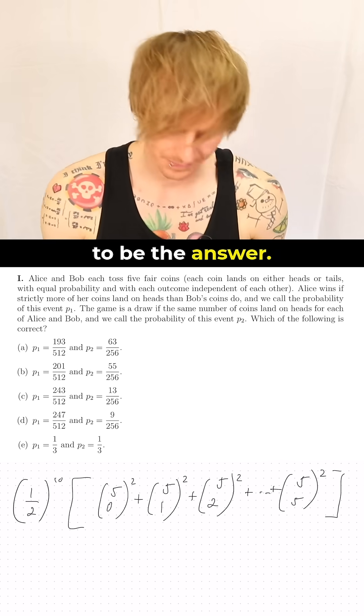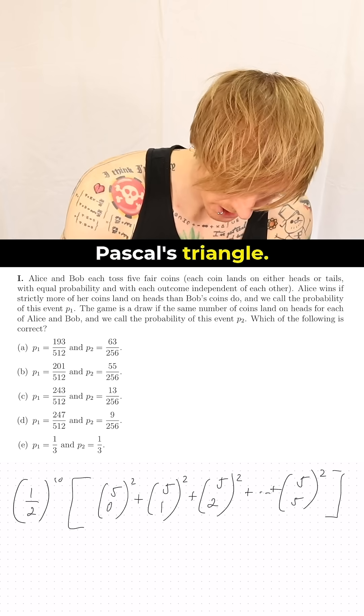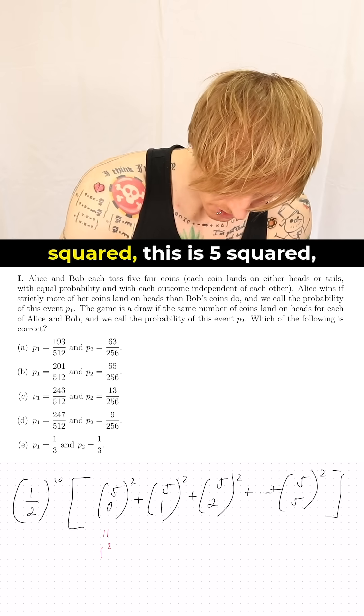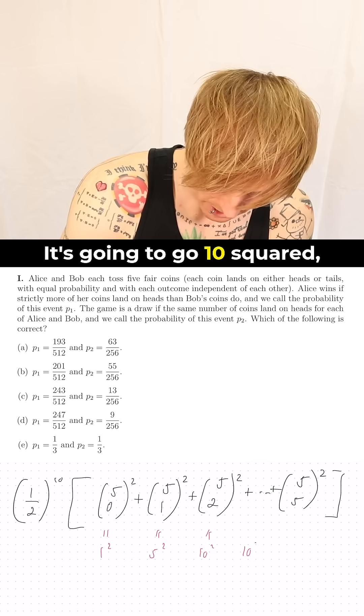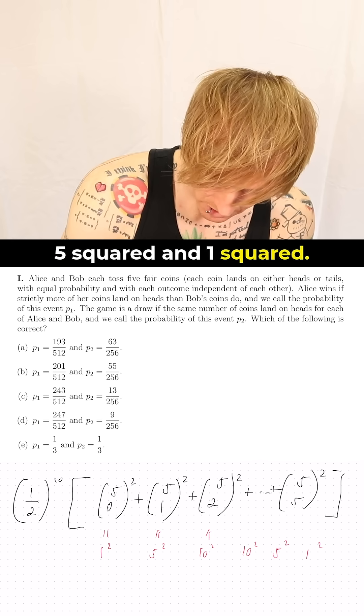And this is actually going to be the answer. So this is now just Pascal's triangle so we know that this one is one squared, this is five squared, this is ten squared, it's going to go ten squared, five squared and one squared.